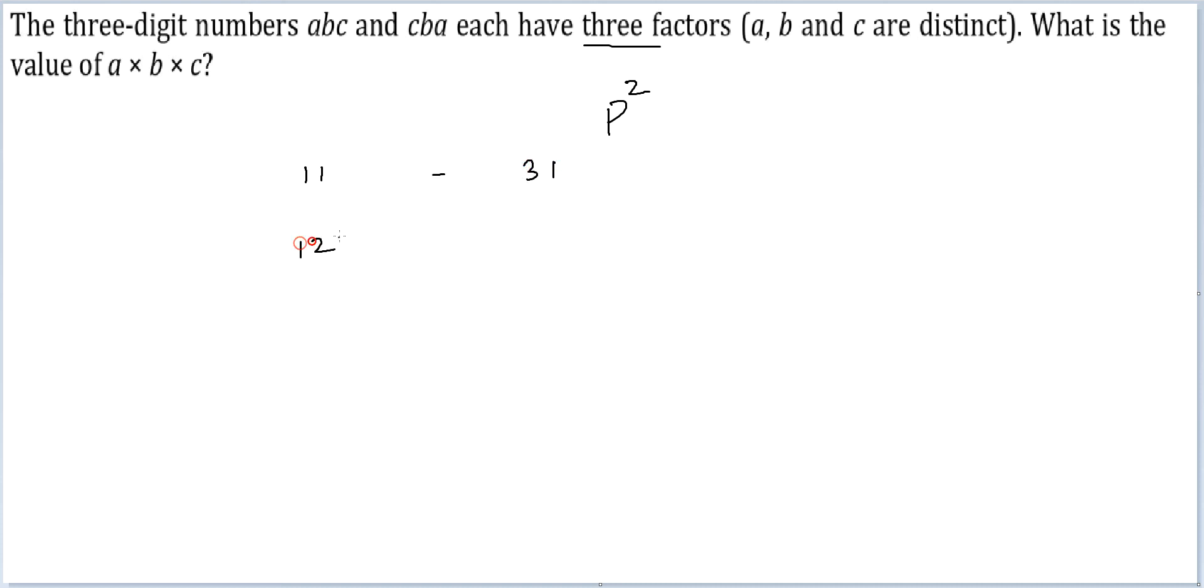Let's list them: 121, 169. This is for 11. This is for 13. For 17, I get 289. For 19, I get 361. For 23, I get 529. For 29, I get 841. And for 31, I get 961.